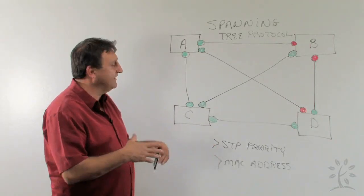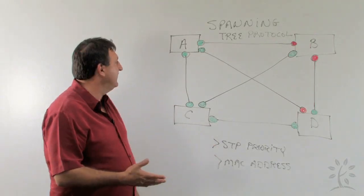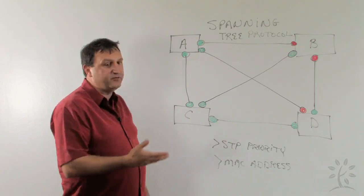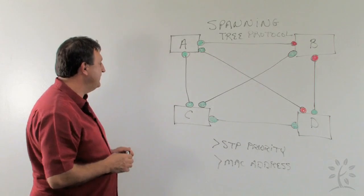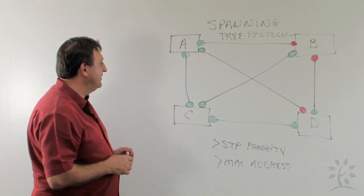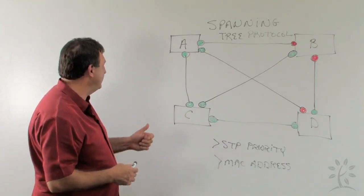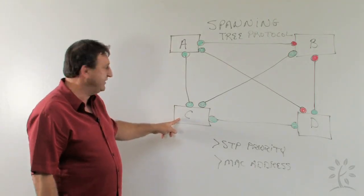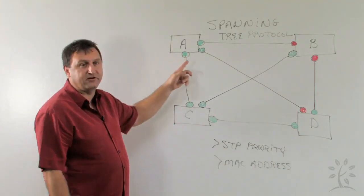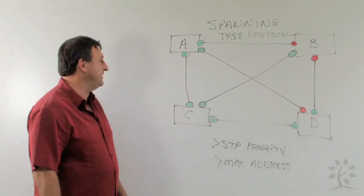When it settles down, the election process has been completed. And what we'll end up with is one of these switches being elected as the root switch. And so if we looked at this situation, which one of these switches would be the root switch? Well, it looks like we have two good candidates. We have switch A and we have switch C, which would be good candidates for the root switch. Why? Because all of their switches are on. So it's a good chance that one of them two are the root switch.